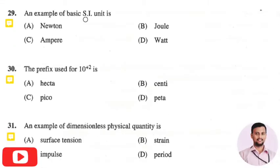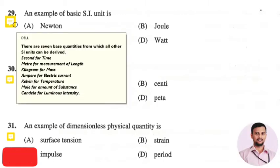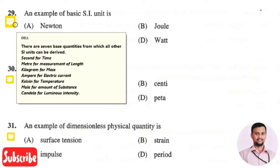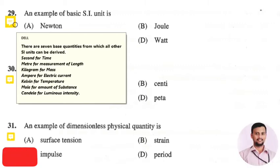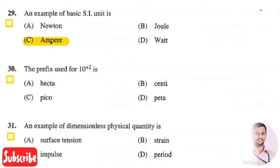The next question is: an example of a basic SI unit is — the right answer is ampere. Basic SI units are the fundamental quantities from which all other SI units can be derived: second for time, meter for length, kilogram for mass, ampere for current, kelvin for temperature, mole for amount of substance, and candela for luminous intensity. So ampere is a basic SI unit.